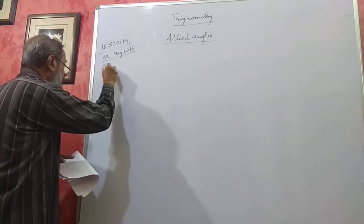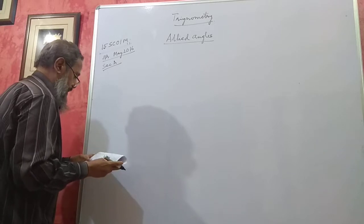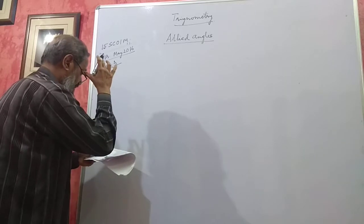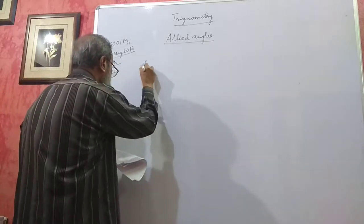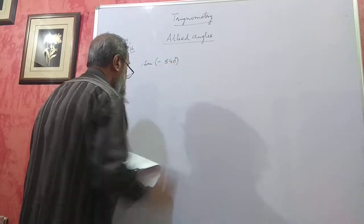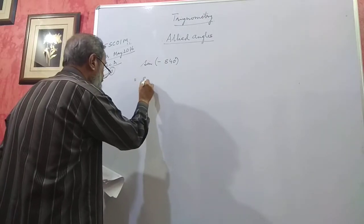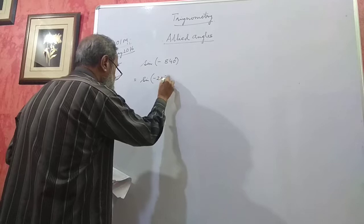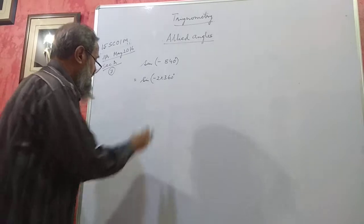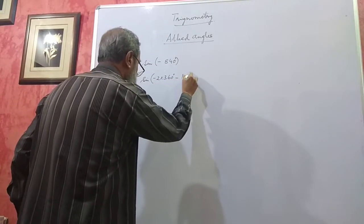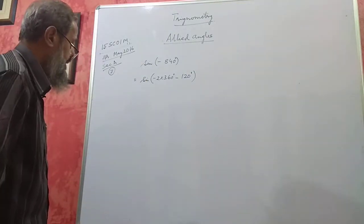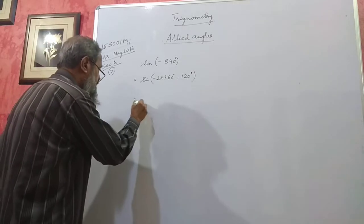Section A, problem number 7. Find the value of sin(−840°). That means sine of minus 2×360°, going in the clockwise direction two rotations, covering 720°, leaving minus 120°. Minus 840 can be split into 2×360 and 120 degrees, so it becomes sin(−120°).